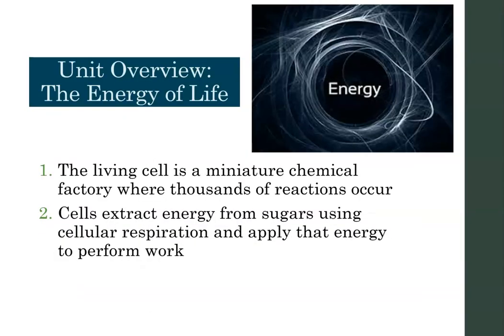In Unit 2, Chapters 6, 7, and 8, we talk a lot about energy and how cells use and produce energy. A living cell can basically be thought of as a miniature chemical factory, where thousands of reactions are occurring all the time to help that cell run, do its job, grow, and interact with its environment. Cells extract energy from sugars and other molecules to produce energy. In Chapter 7, we'll learn about cellular respiration, where cells release energy from carbohydrates to produce ATP.